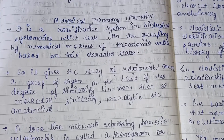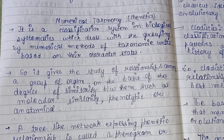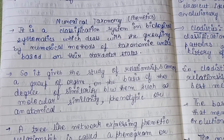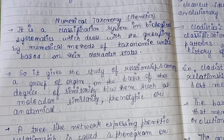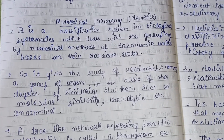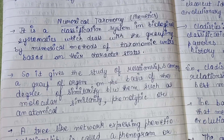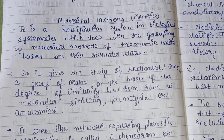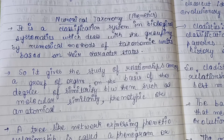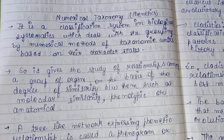Hello everyone, welcome back to my channel. Earlier we discussed chemo taxonomy and behavioral taxonomy. Today we are going to discuss numerical taxonomy or phenetics. It is a classification system in biological systematics which deals with the grouping by numerical methods of the taxonomic units based on their character states.